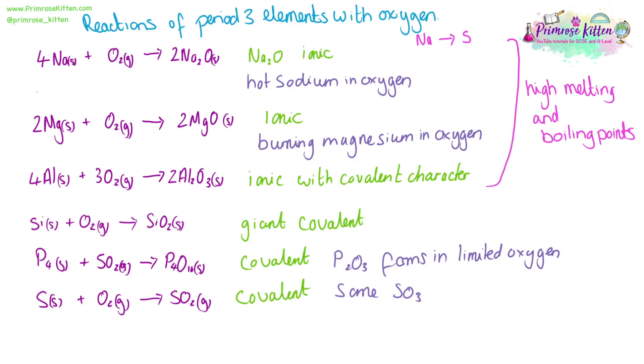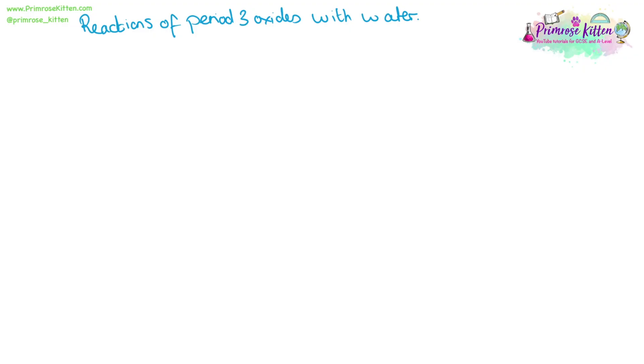The ionic compounds will have high melting and boiling points, whereas the other ones will have lower ones. This is the reaction of period three oxides with water.